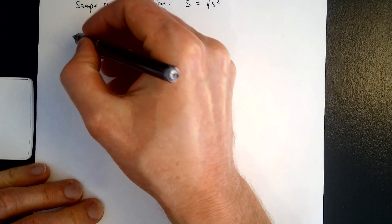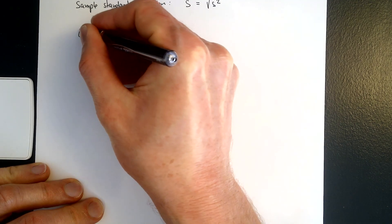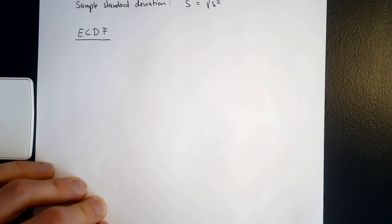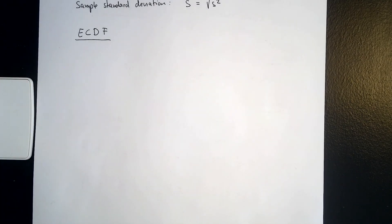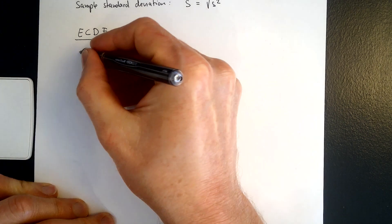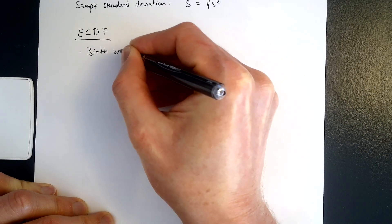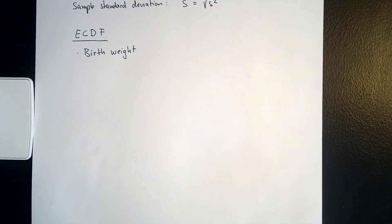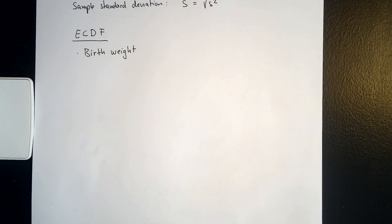Let us look at the empirical cumulative distribution function, abbreviated ECDF. The concept you are most likely familiar with is birth rate percentiles. If you have a child, the doctor will tell you what percentile your child is in. For example, if your doctor says weight-wise your child is in the 80th percentile, this means 80% of children in the same age bracket are lighter than your child and 20% are heavier.